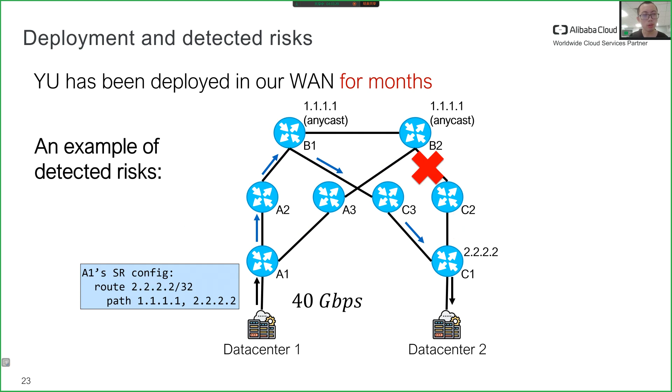However, the expected behavior is incorrect. In fact, the routers will still forward traffic to router B2, and the traffic would then go to B1 via link B2 to B1. But the link B2 to B1 was never designed to carry such a large amount of traffic, so the link would be overloaded. This problem is hard to notice without help from Yu. We reported this problem to our operators and received confirmation.